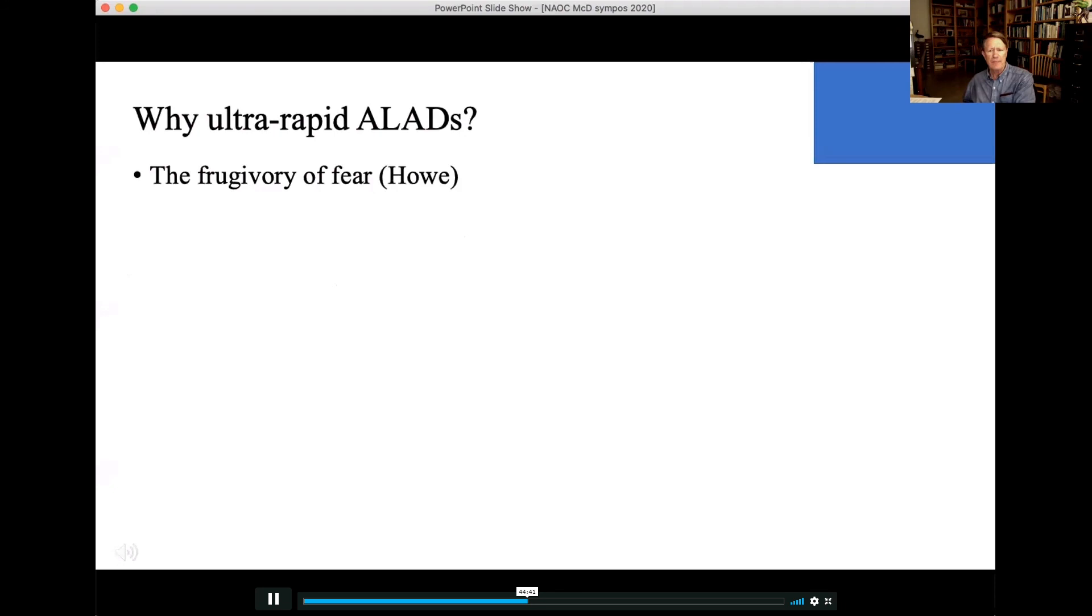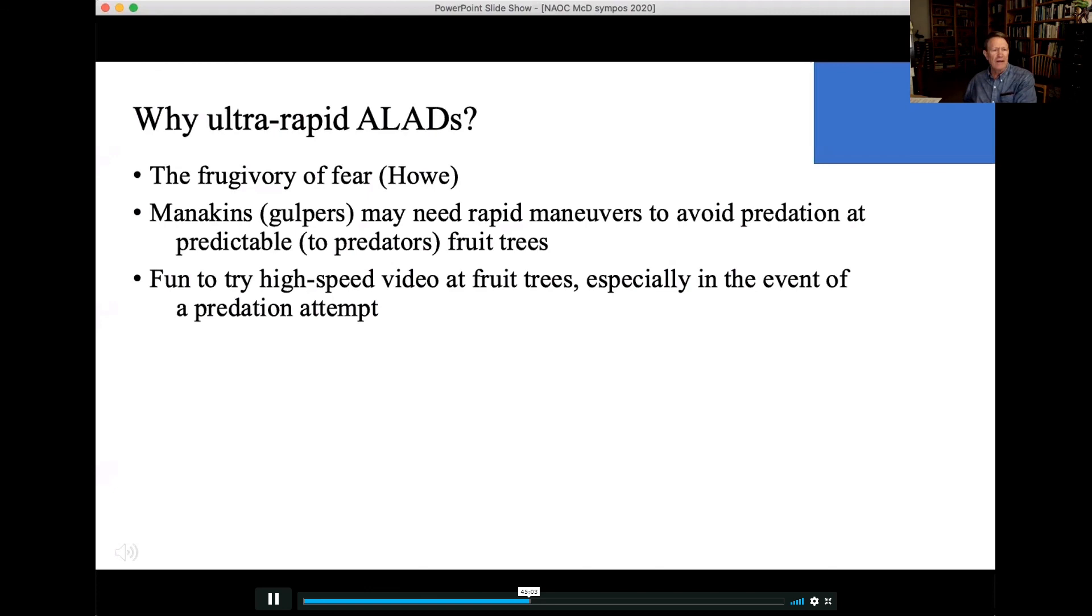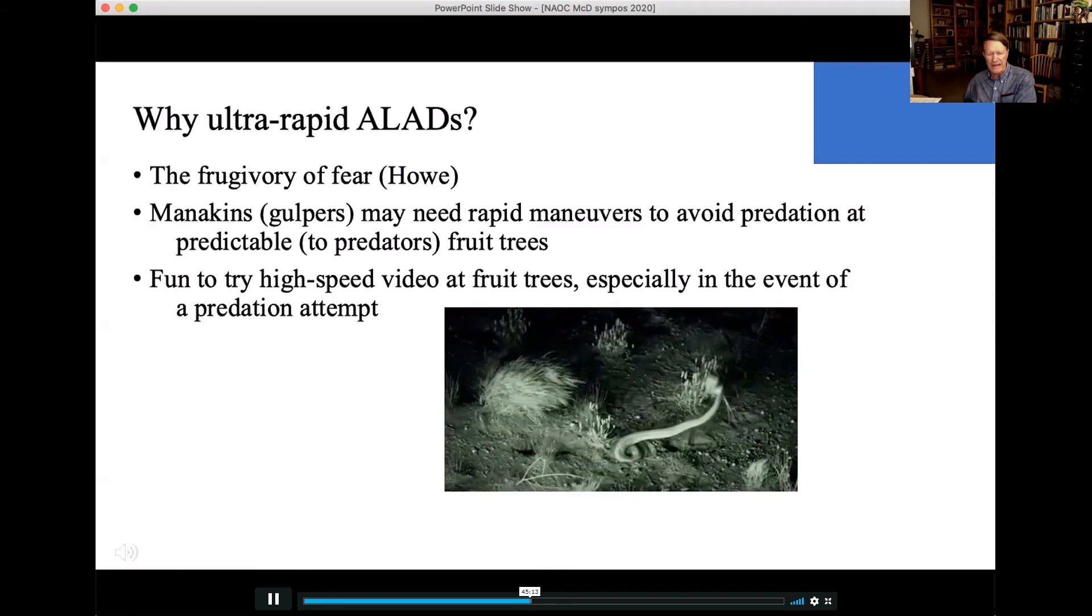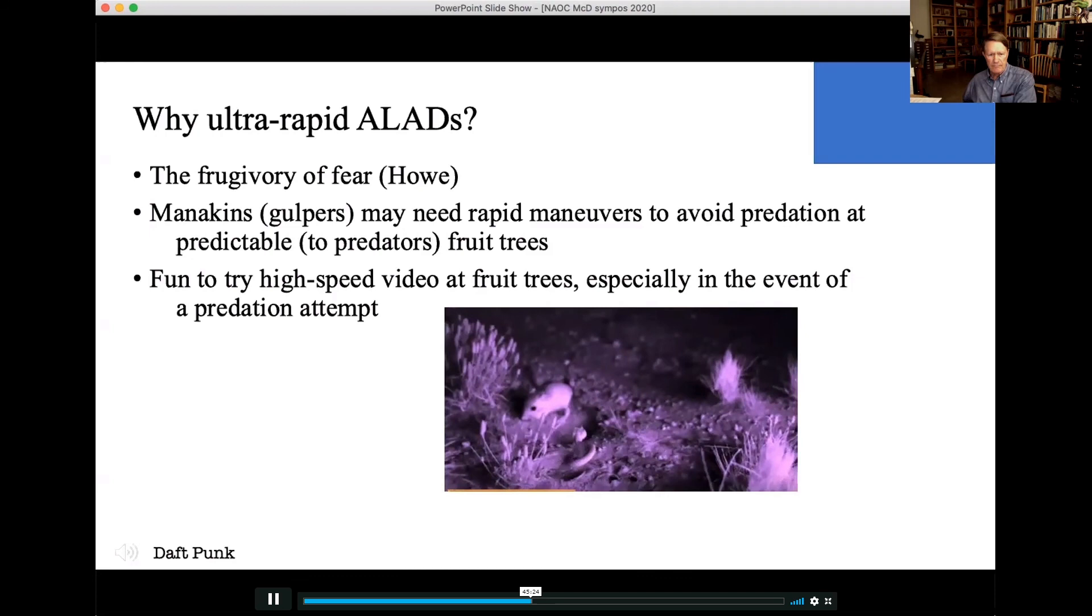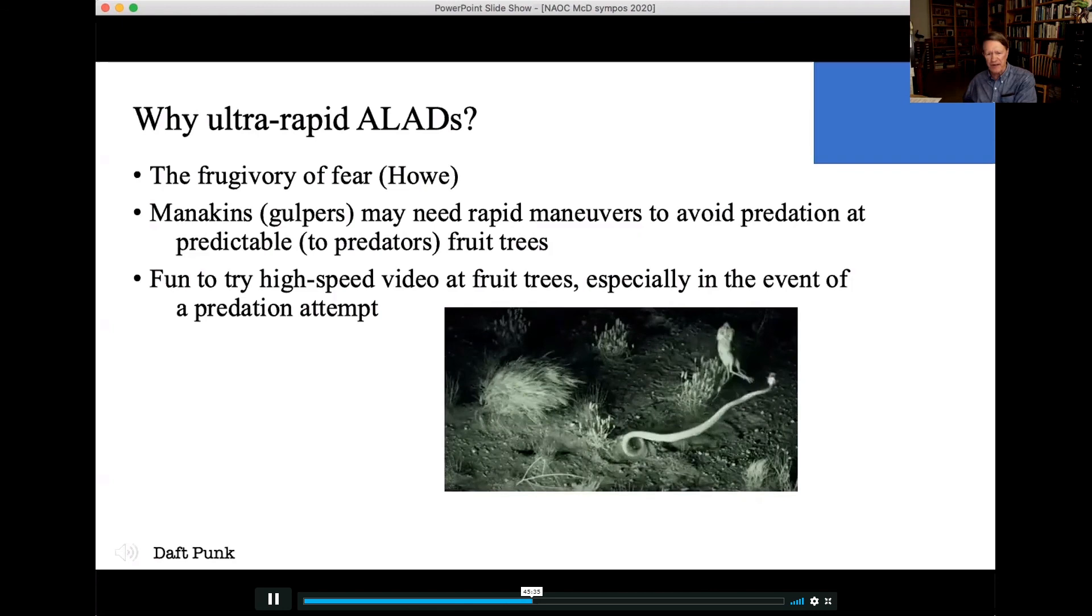But the ALADs, why do they do that? Howe, way back, talked about the frugivory of manakins, which Doug Levey termed gulpers because they swallow their food. They need rapid maneuvers to avoid predation at predictable fruit tree locations. I think it would be really fun, borrow my camera, to try high-speed video at fruit trees, especially in the event of a predation attempt. So, let's watch some video here. Here we have a rattlesnake striking at a kangaroo rat. Bam! Fast maneuver. Go, rattlesnake! It'd be fun to see. I doubt that manakins can kick tiny hawks, but it'd be fun to see if they can do these rapid, evasive maneuvers like the kangaroo rats.